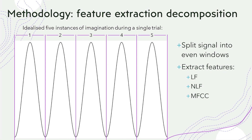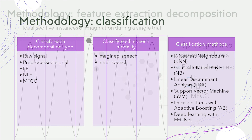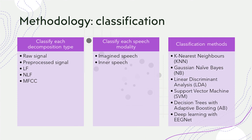Participants perform five repetitions of each phoneme during a single trial. Each trial is split into even windows aligned with instances of imagination. Idealized, these instances represent a sinusoidal wave. The linear features, non-linear features and MFCCs are then extracted from each window. To perform thorough analysis on the aims, each decomposition type and mode of speech is classified using both conventional and deep learning methods.